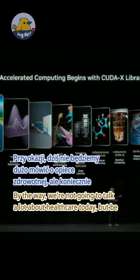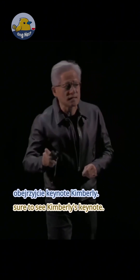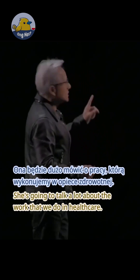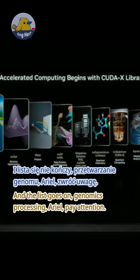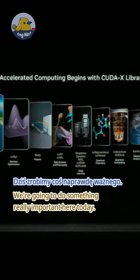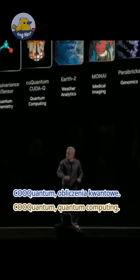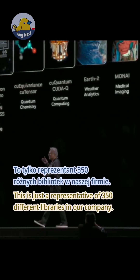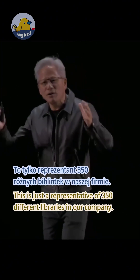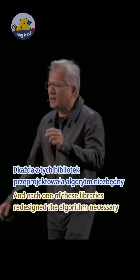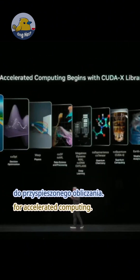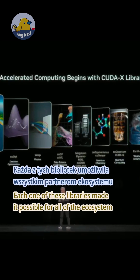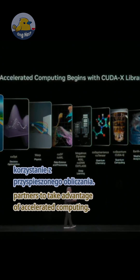The list goes on: MONAI — really, really important, the number one medical imaging AI framework in the world. We're not going to talk a lot about healthcare today, but be sure to see Kimberly's keynote — she's going to talk a lot about the work we do in healthcare. And the list goes on: genomics processing, Aerial — pay attention, we're going to do something really important here today — cuQuantum for quantum computing. This is just a representative of 350 different libraries in our company, and each one of these libraries redesigned the algorithm necessary for accelerated computing, making it possible for all of the ecosystem partners to take advantage of accelerated computing.